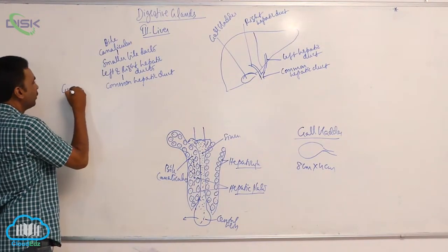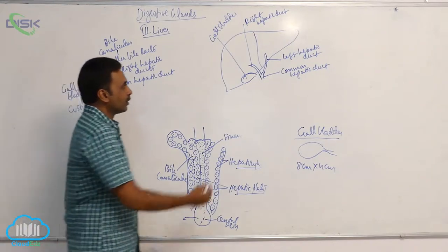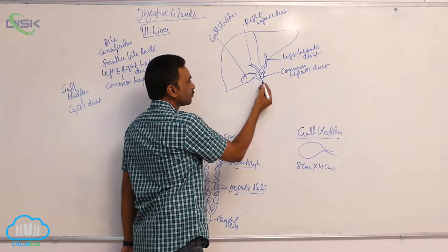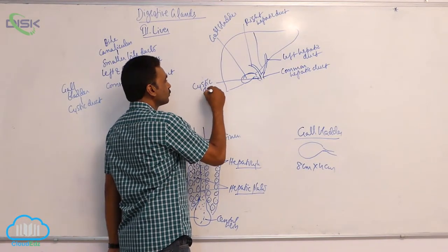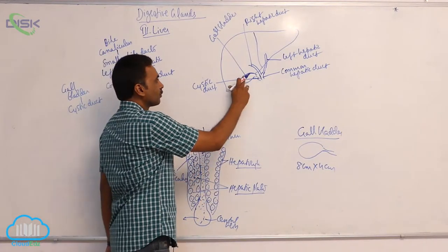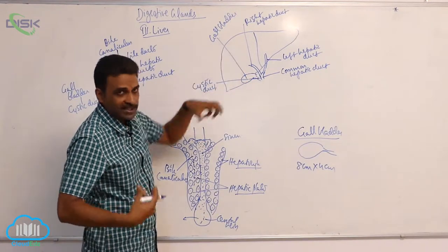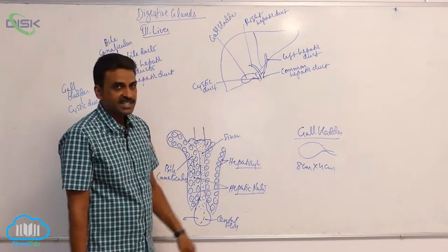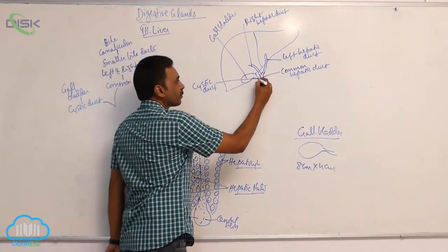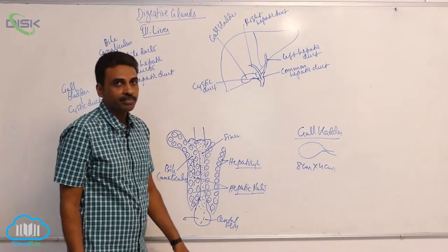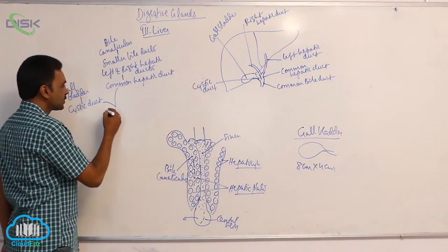The bile juice entering the gallbladder is slightly different from the bile juice leaving it. From the gallbladder originates a cystic duct. The cystic duct goes and combines with the common hepatic duct, and together they form a common bile duct.